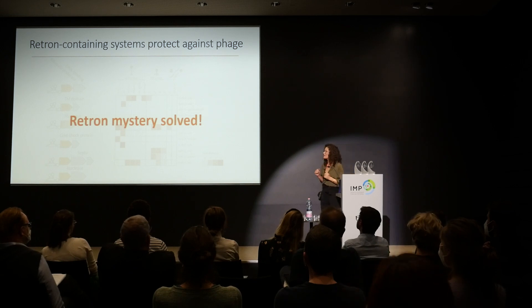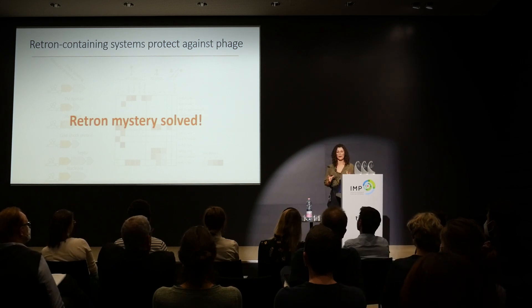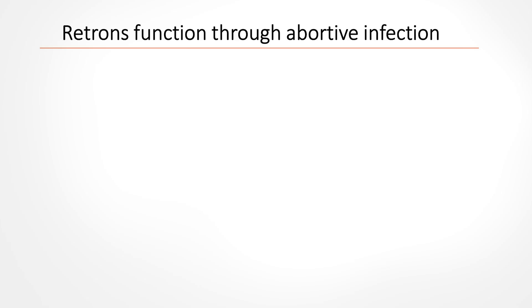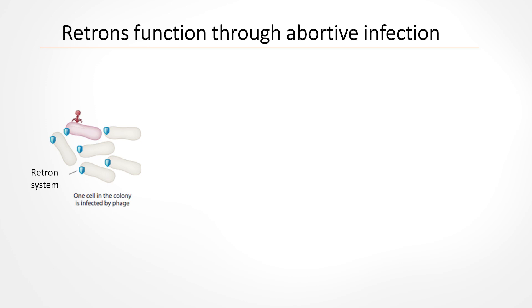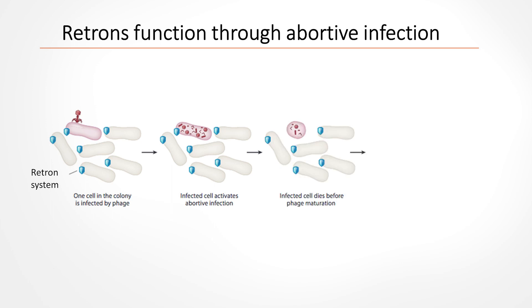I think we can say the retron mystery is solved, but we wanted to know the mechanism. Digging deeper, we found that retrons work through abortive infection: if a bacterium has the system in its genome and a phage infects it, before the phage is able to complete its replication cycle, the cell commits suicide. The phage is thus excluded from the phage pool, and the bacterial colony survives.